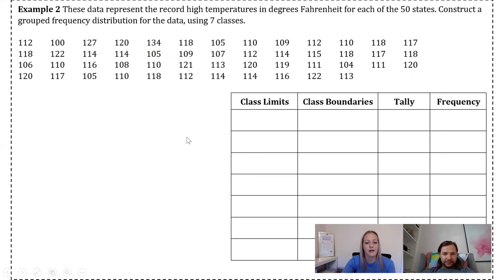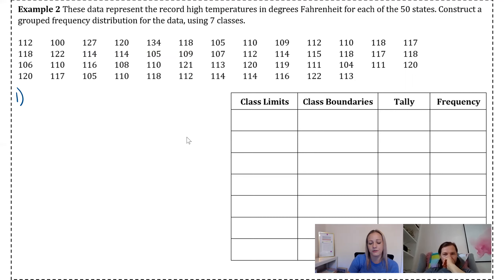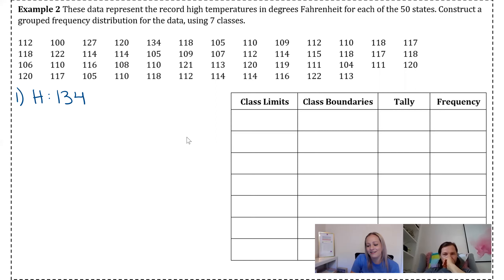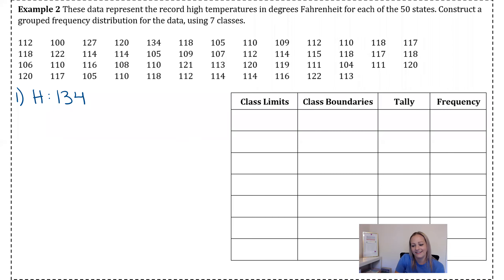Example two: the data represents record high temperatures in degrees Fahrenheit for each of the 50 states. Construct a grouped frequency distribution using seven classes. Step one: find the highest and lowest values. The largest number is 134 and the smallest is 100. Then find the range: highest minus lowest = 134 minus 100 = 34.